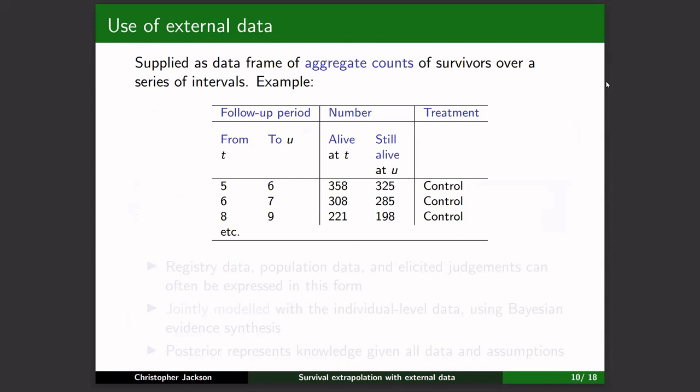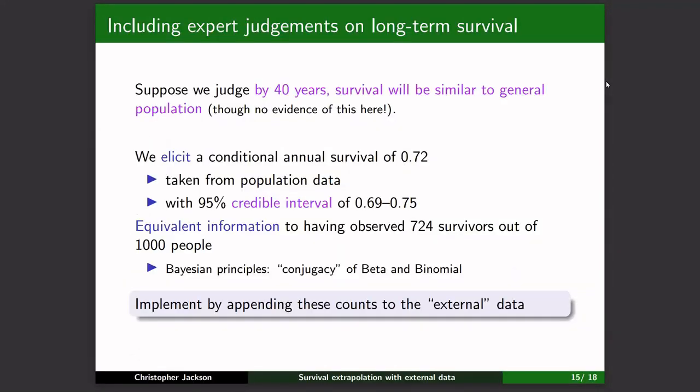Follow-up: What about a range of proportions — like between 5% and 15% at 10 years? Response: Yes, you can convert that range into an effective count, essentially — using the Bayesian conjugacy approach described earlier. That captures the uncertainty around the elicited probability.